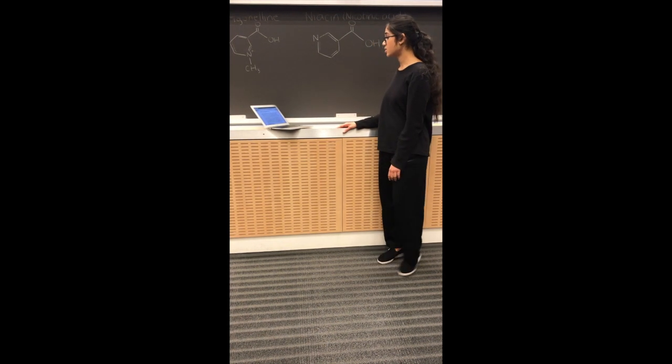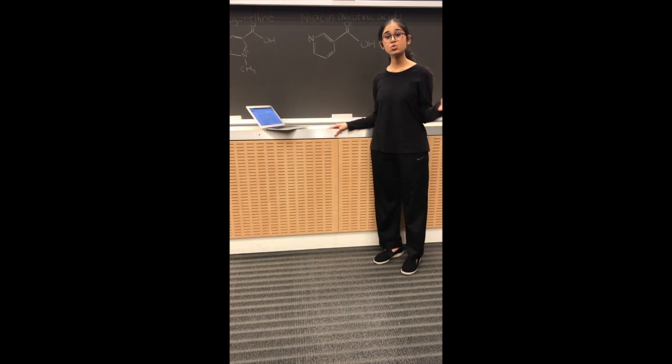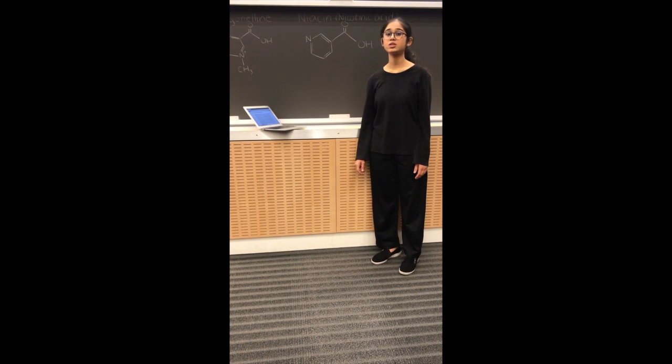Dendrites and axons are specialized projections of neurons that carry information to and from the cell. So, as you can see, there's a lot of potential trigonelline bonds.